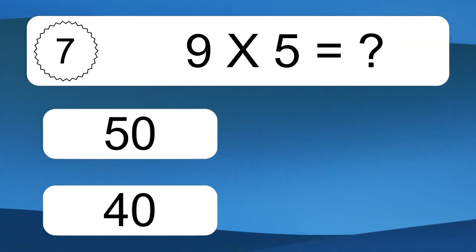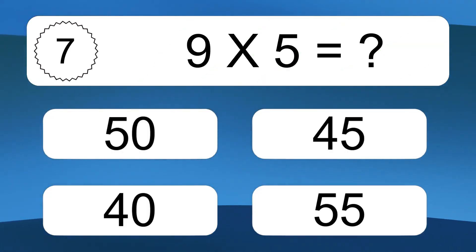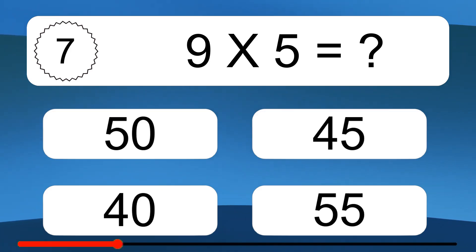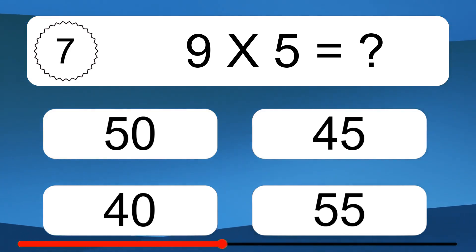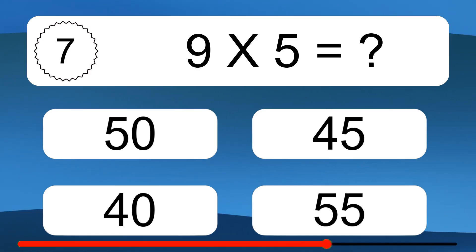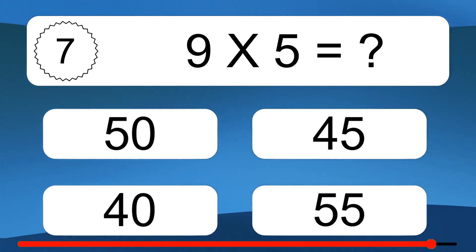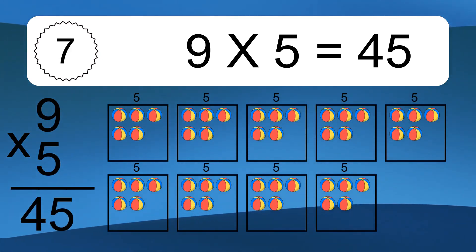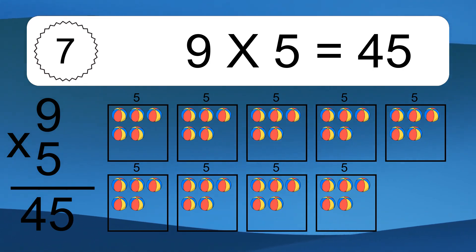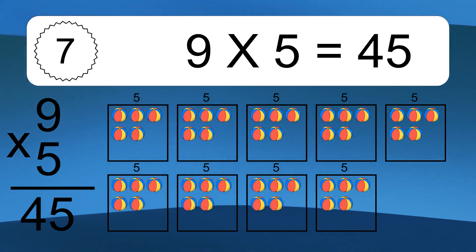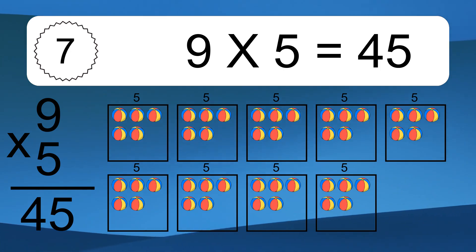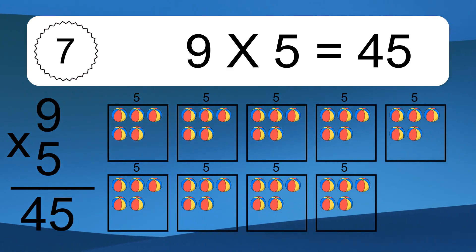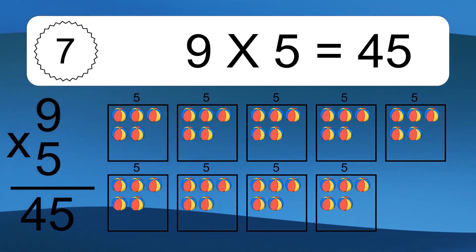9 times 5 equals what? 9 times 5 equals 45. We have 9 boxes, and each box has 5 colorful balls inside. If you count all the balls in all the boxes together, you will have 9 times 5 balls. This equals 45 balls.